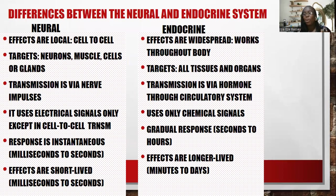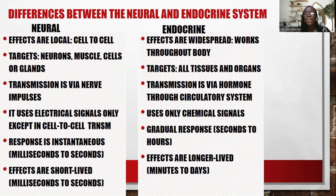Even though they complement each other, there are some basic differences to note. For the neural system, effects are usually local — just cell to cell — but for the endocrine system, effects are widespread throughout the body. For the neural system, target cells are neurons, muscles, or glands; for the endocrine system, the target is all tissues and organs in the body. Transmission in the neural system is via nerve impulses, while in the endocrine system it is via hormones through the circulatory system.